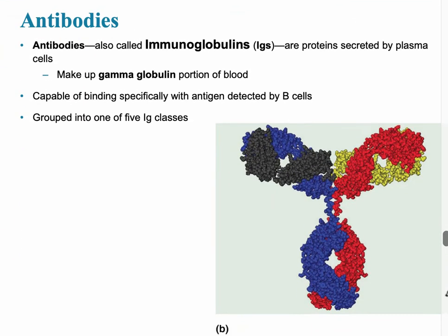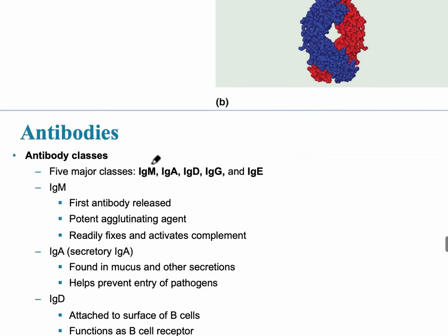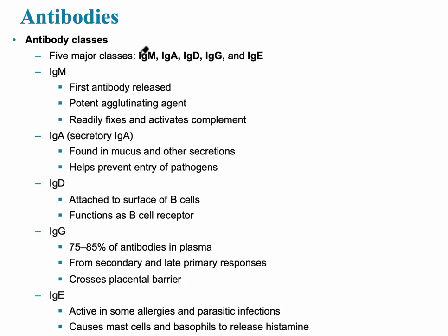Antibodies are immunoglobulins — when you hear IgG, that refers to immunoglobulins. Immunoglobulins are the gamma globulin portion of the blood, capable of specifically binding with antigens detected by B lymphocytes. There are five different classes. Most antibodies have a Y-shaped structure with a variable region and a constant region.